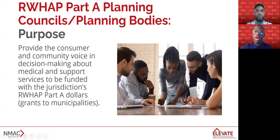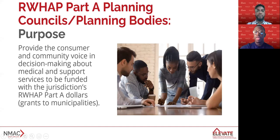Before a municipality called an eligible metropolitan area or transitional grant area can receive Ryan White Program Part A funds, the chief elected official — the CEO, usually the mayor — is required to appoint people to a planning council or planning body. Because the CEO will have a number of other responsibilities beyond the planning council, they will often appoint a lead agency, usually the health department, to manage the grant — we'll call this delegate the recipient. The Ryan White HIV program legislation requires planning councils to have members from various types of groups and organizations, including people living with HIV who live in the jurisdiction. A key function of the planning council is to provide the consumer and community voice and decision making about medical and support services to be funded with the jurisdiction's Ryan White Part A dollars. The planning council conducts integrated and comprehensive planning, determines priorities and decides how to allocate resources, and works to ensure a system of care that provides equitable access to care and needed services to all eligible people living with HIV in the jurisdiction.